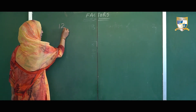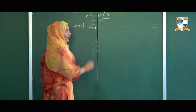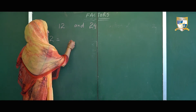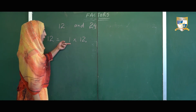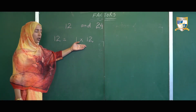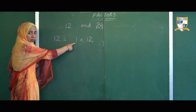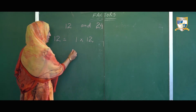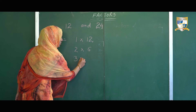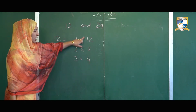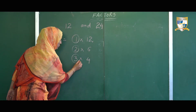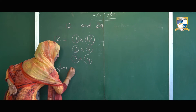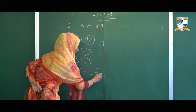Now I'll consider 2 numbers: number 12 and number 24. I'll find all the factors of number 12. 12 can be written as 1 multiplied by 12 — this is the first possible combination. So 1 and 12 are factors of 12. The second possible combination is 2 × 6 = 12. The third possible combination is 3 × 4 = 12. So individually these are all the factors of number 12: 1, 2, 3, 4, 6, and 12.